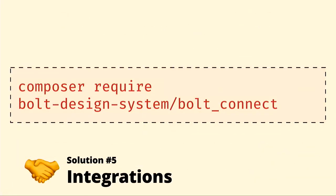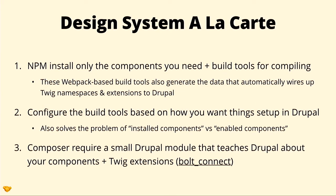Finally, let's talk about integrations. With this approach, you NPM install just the components that you need, and build tools take those components, tell Drupal about where they live, what the folder structure is, what their path is. In Drupal, you enable which components you want to use — you can NPM install the button, but then tell the system yes, I want to use this. The build tools switch on what you want to use, and then our Bolt-Connect module on Packagist takes the paths for your components and dependencies and tells Drupal's Twig instance where all your components live. Whenever a component's path updates, Drupal now knows about them automatically.